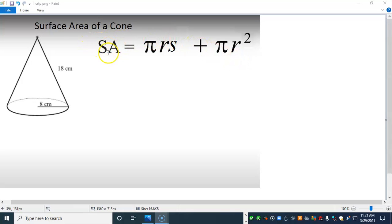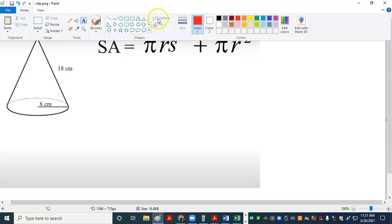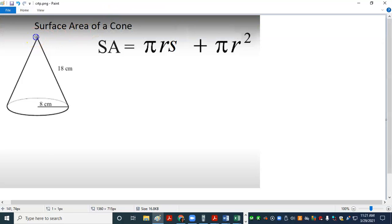It says SA, surface area, is equal to pi times the radius of the base of the cone times S. Now S is something new. S is actually what we call the slant height, and the slant height is this dimension right here. It's from the tip of the cone to the bottom of the base on the outside, and it's at a slant, so we call it the slant height, or S.